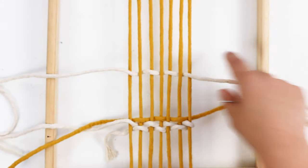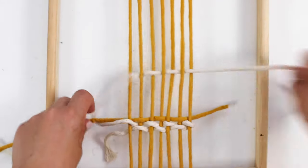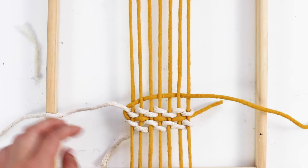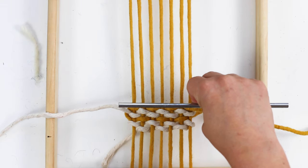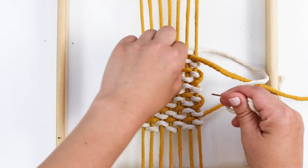Then just continue to alternate between weaving two rows with the natural color and one row with the yellow, doing tabby the entire way until you have finished the area.